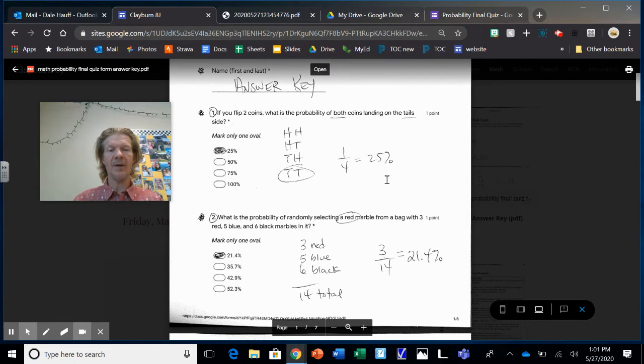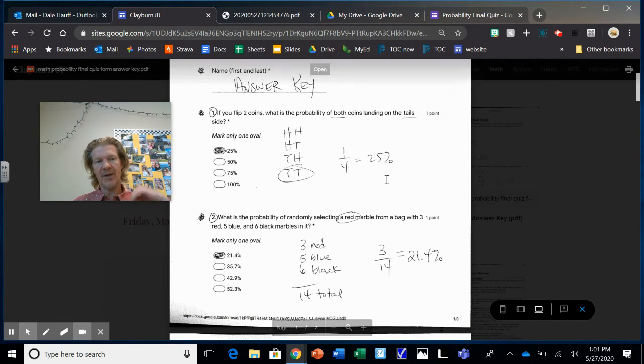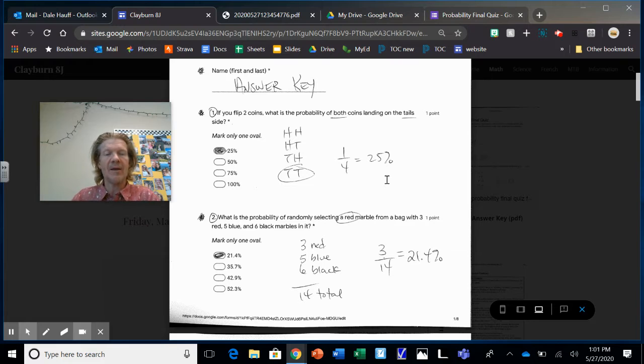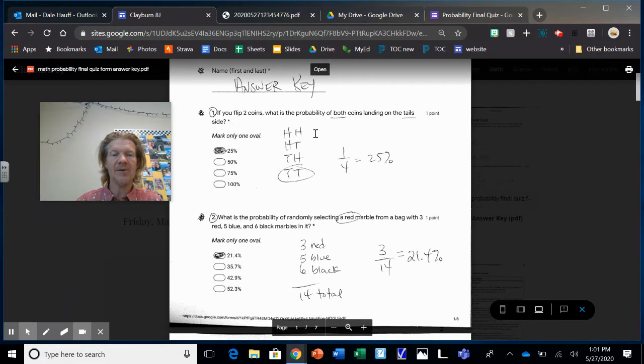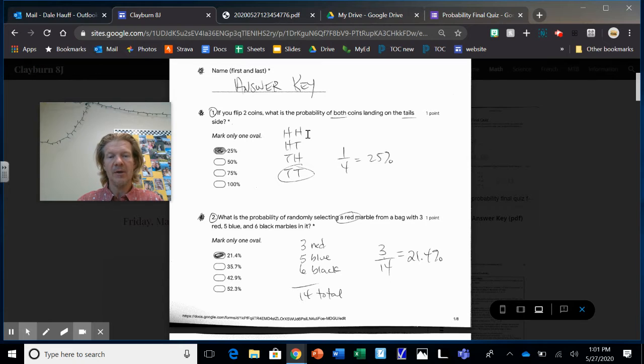So what I wanted to do today, this is the Wednesday quiz. So if you haven't done it, click on there. If you have done it, click on here and this is a PDF form of the quiz. So I'm just going to walk you through it really quickly. This is the answer key. If you flip two coins, what's the probability of both coins landing on tails? So here are the four outcomes: heads heads, heads tails, tails heads, tails tails. That's the only four outcomes there can be. There's only one way to get tails tails. So one out of four, 25%.